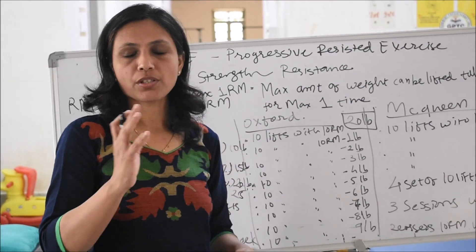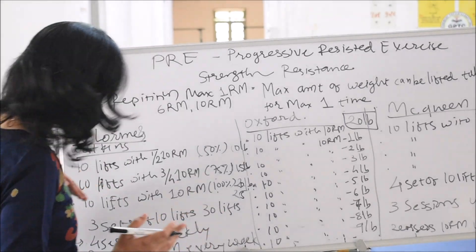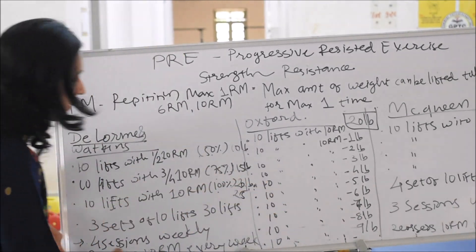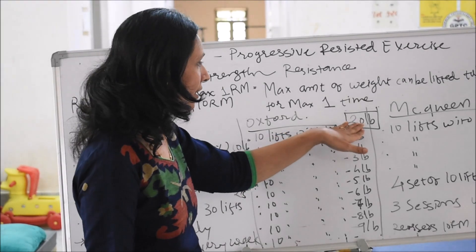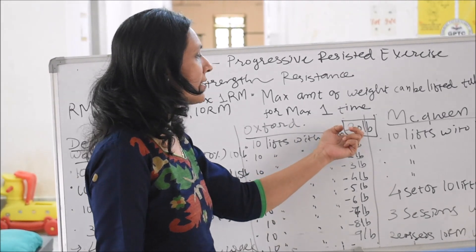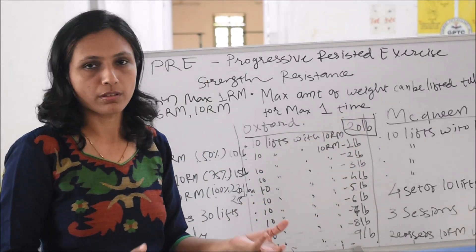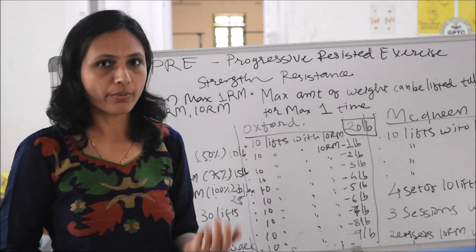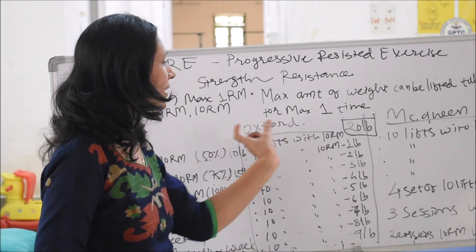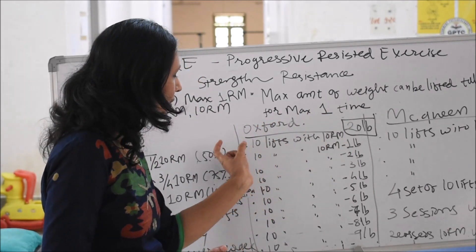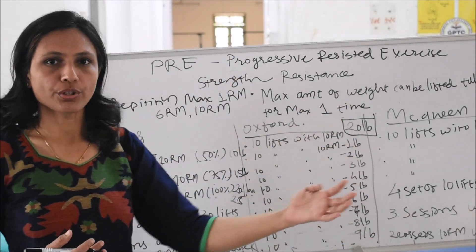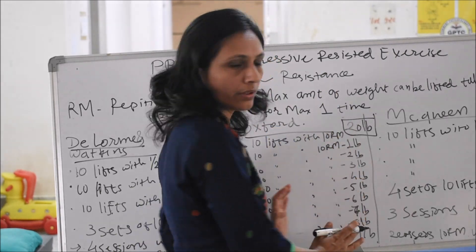The patient performs 4 to 5 sessions per week. In the next week, the 10RM is reassessed — in this case 20 pounds may increase to 25 pounds. At that point you start with 10 lifts at the new 10RM of 25 pounds, then 24 pounds, and so on, decreasing by 1 pound each set. This is the Oxford technique.